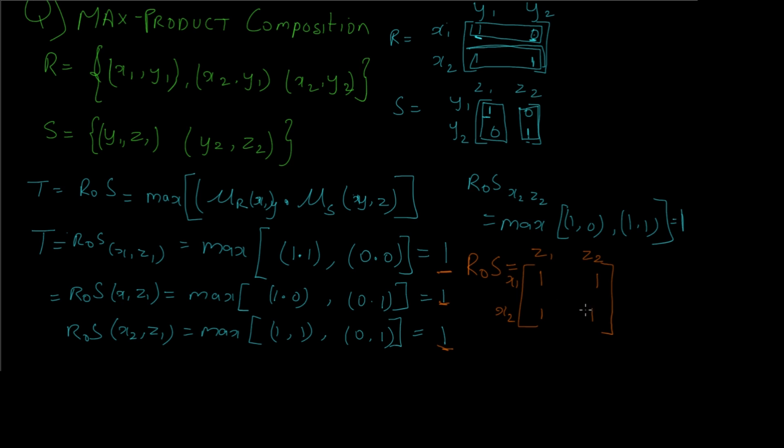Now since all the values are 1, we can say that it is completely related, that is R∘S has all the terms required. So this is how we go ahead and solve max-product composition. That's it for this video. I hope you understood the max-product composition technique. If you like this video, give it a thumbs up and don't forget to subscribe to our channel. Peace!